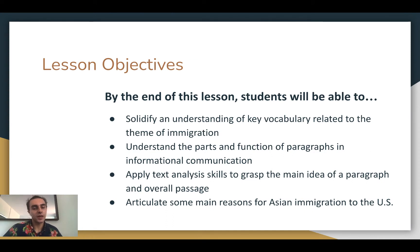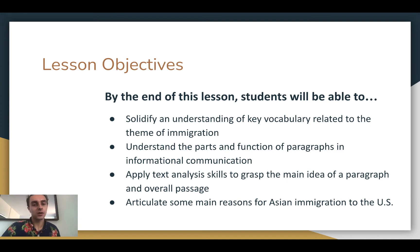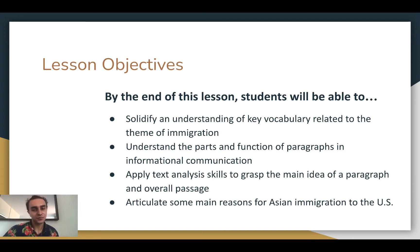These are your objectives. By the end of the lesson, you'll have some new vocab related to the theme of immigration — and if you don't know what immigration is, we will go over that on the next slide. You'll understand what a paragraph does and the different parts of a paragraph. You'll learn and be able to use some text analysis skills — reading skills — so that you can understand the main idea of a paragraph and an article, and you'll be able to talk about some reasons why Asians immigrated to the U.S.